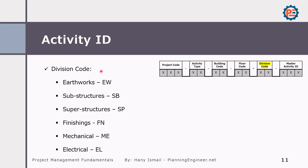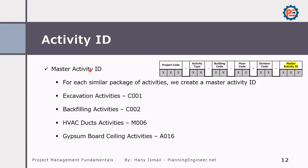The division code gives a good understanding of the activity — whether it is earthwork, substructure, superstructure, finishing, mechanical, electrical, and so on. You can also filter any activity using any of these digits. Finally, the master activity ID: in my projects, the excavation activity will always be C001. It might appear in different buildings, floors, or divisions, so whenever I see C001, it means excavation works. This makes filtering for a certain activity very easy.